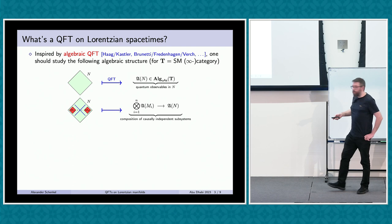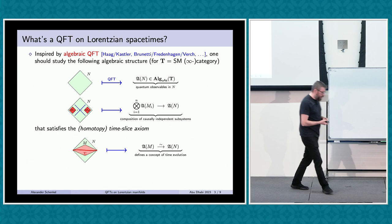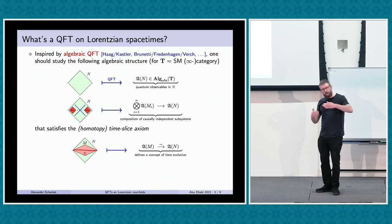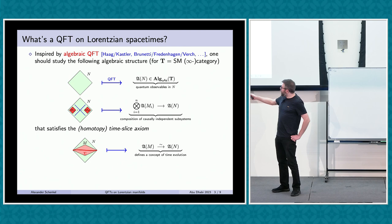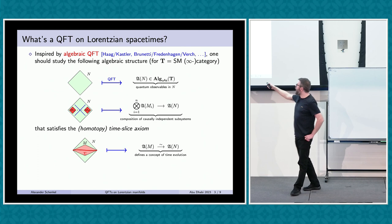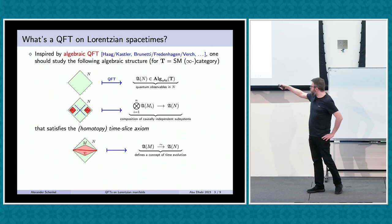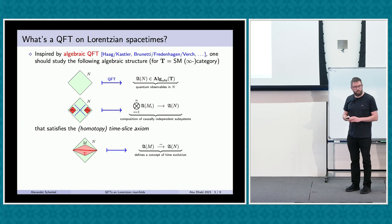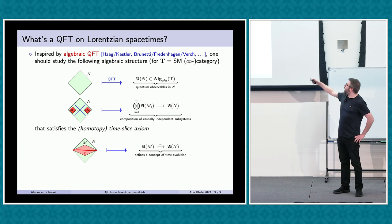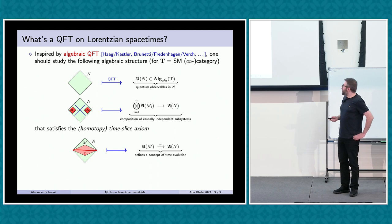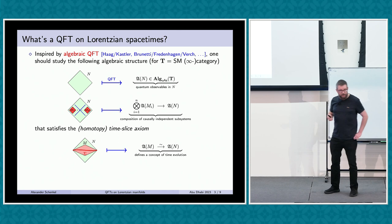QFTs on Lorentzian manifolds should have a concept of time evolution. In this language, Cauchy morphisms — embeddings sufficiently wide to contain a Cauchy surface of the big space-time — should be assigned equivalences of algebras. Through these equivalences you get time evolution: you can start from a small time interval, go to a bigger one, and match observables. When working with ordinary algebras, these are isomorphisms; with chain complexes, quasi-isomorphisms.